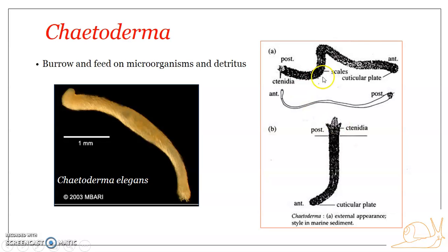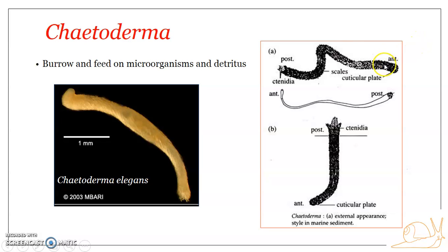As already mentioned, Chaetoderma do have ctenidia or gills — they are a gilled group. A pair of ctenidia is present in the mantle cavity, which is restricted to the posterior end. As noted for Chaetodermomorpha, they lack a foot or pedal groove, but they do have an oral shield — a chemosensory organ located around the mouth. The most common species of Chaetoderma is Chaetoderma pelagicus, commonly referred to as gizomba.